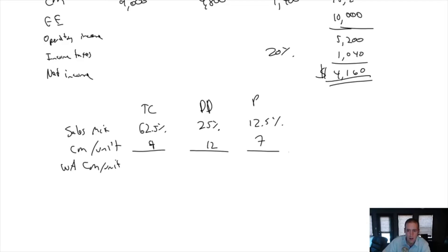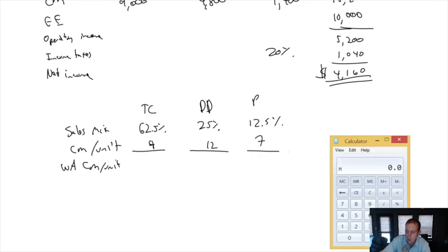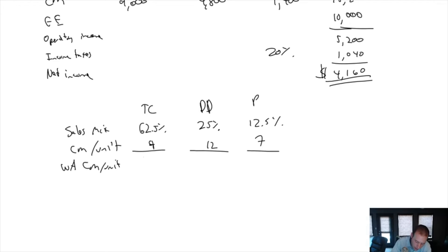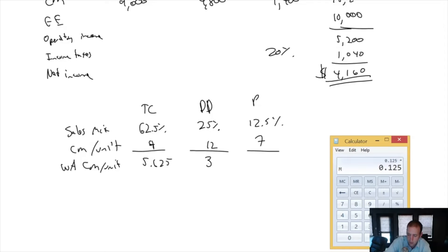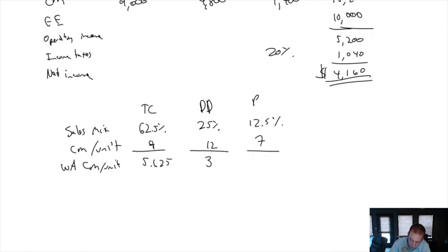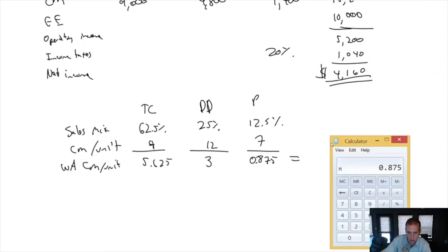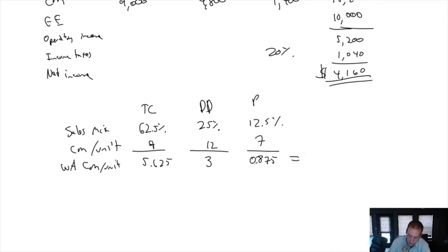Weighted average CM per unit: 62.5% times $9 is $5.625. 25% of $12 is $3. And 12.5% of $7 is $0.875. When I add that up, my weighted average contribution margin per unit, I get $9.50.